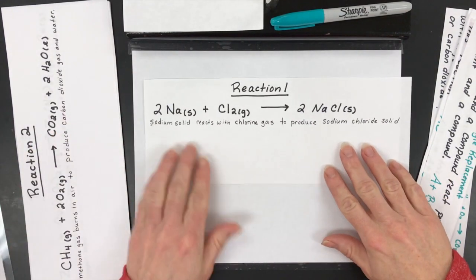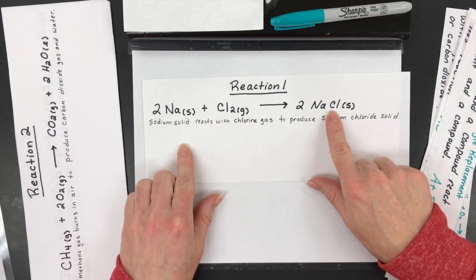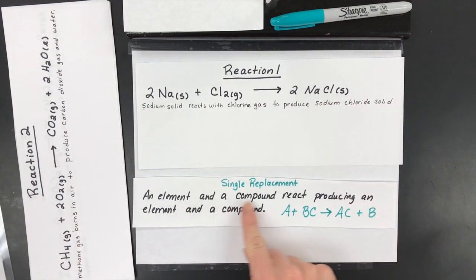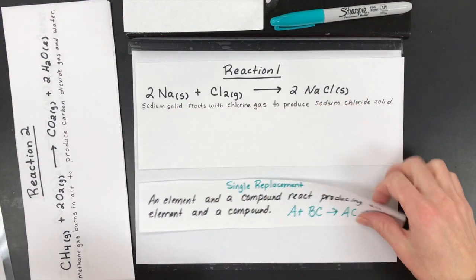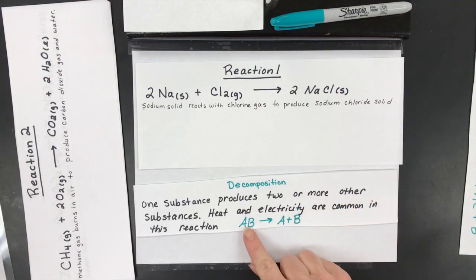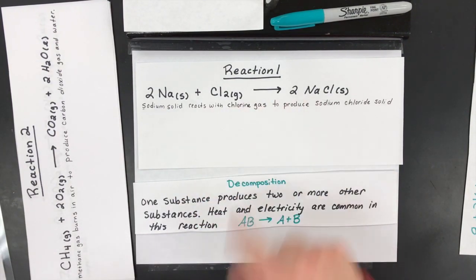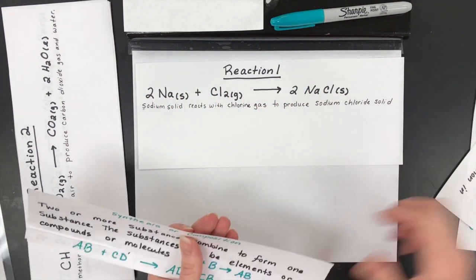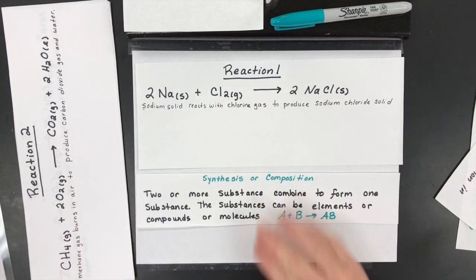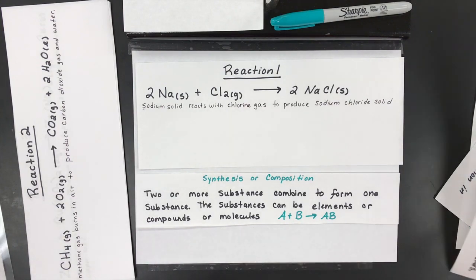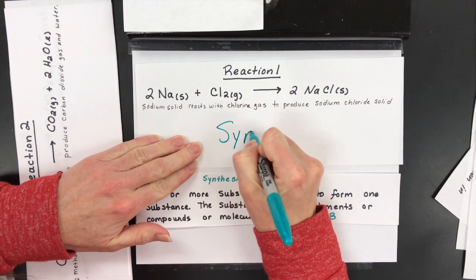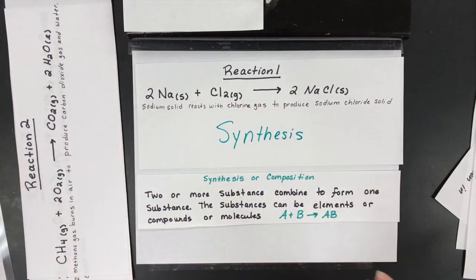Reaction one. We got sodium reacting with chlorine to produce sodium chloride. So what you want to do is kind of look through your choices. Does that look like I have an element and a compound? Nope. I have two pure elements so it's not single. Do I start with one compound and produce many? Nope. It actually looks like the opposite of that. I start with two elements and I make one compound. So there's the winner right there, that I have two or more substances that are combining to form one substance. And that is the definition of synthesis or composition. So this one is synthesis.